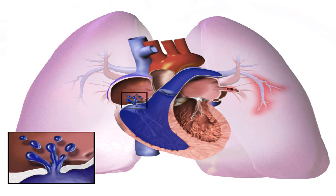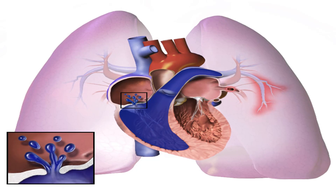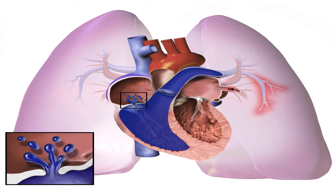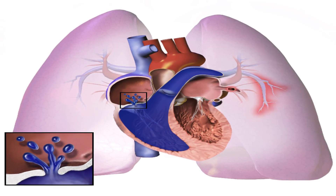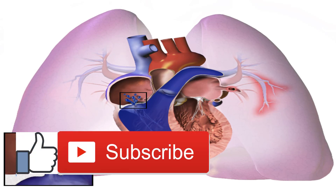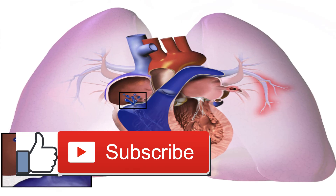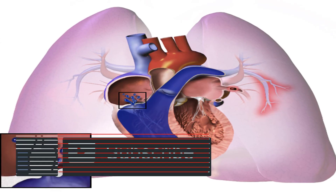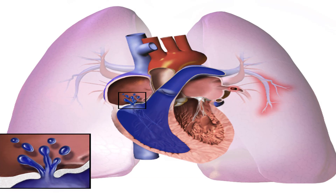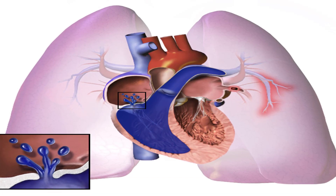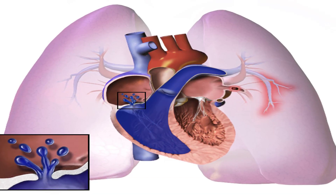Hypertension, commonly known as high blood pressure, is a serious condition that affects one of every three adults in the United States. It's characterized by a blood pressure reading above 140/90 millimeters of mercury. In people with hypertension, blood moves through the blood vessels at a higher pressure, putting increased pressure on the delicate tissues and damaging the vessels.